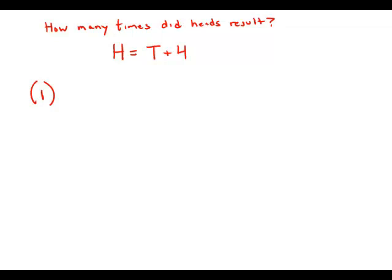Statement number one tells us that the player tossed the coin 24 times. In other words, heads plus tails equals 24.